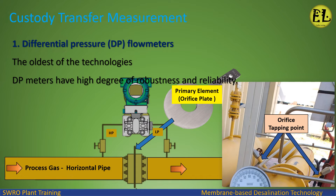Differential Pressure (DP) Flow Meters: The oldest of the technologies, DP meters have a high degree of robustness and reliability.